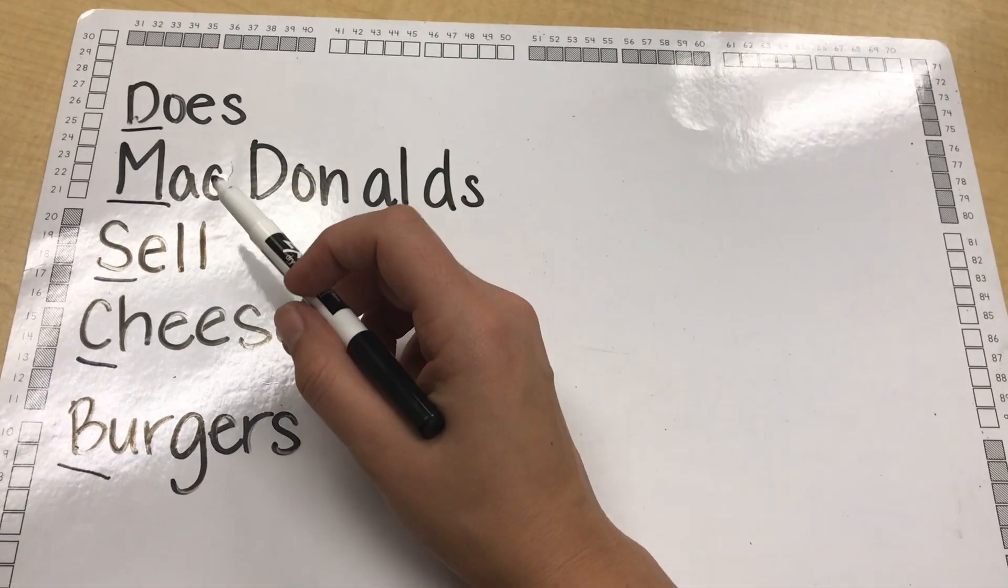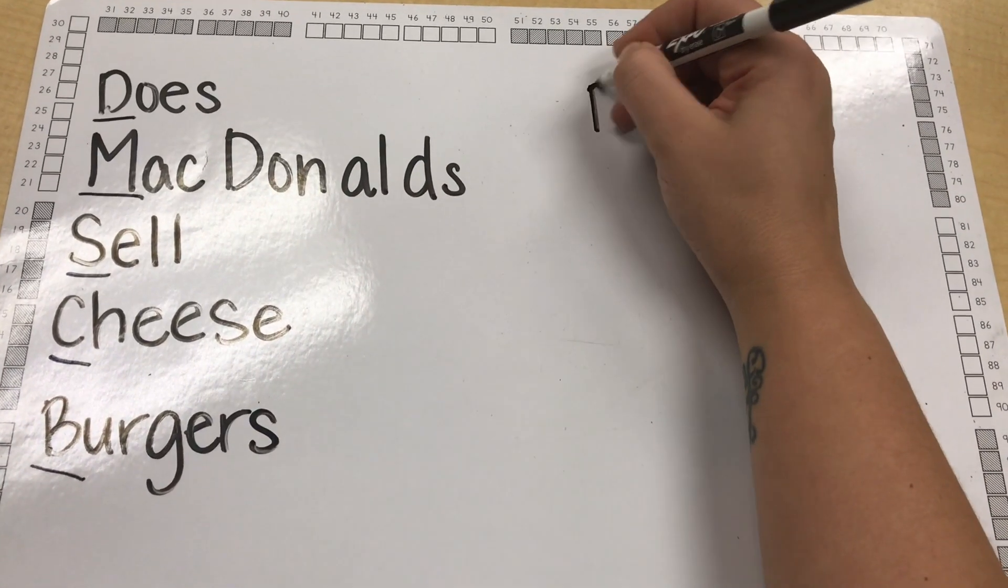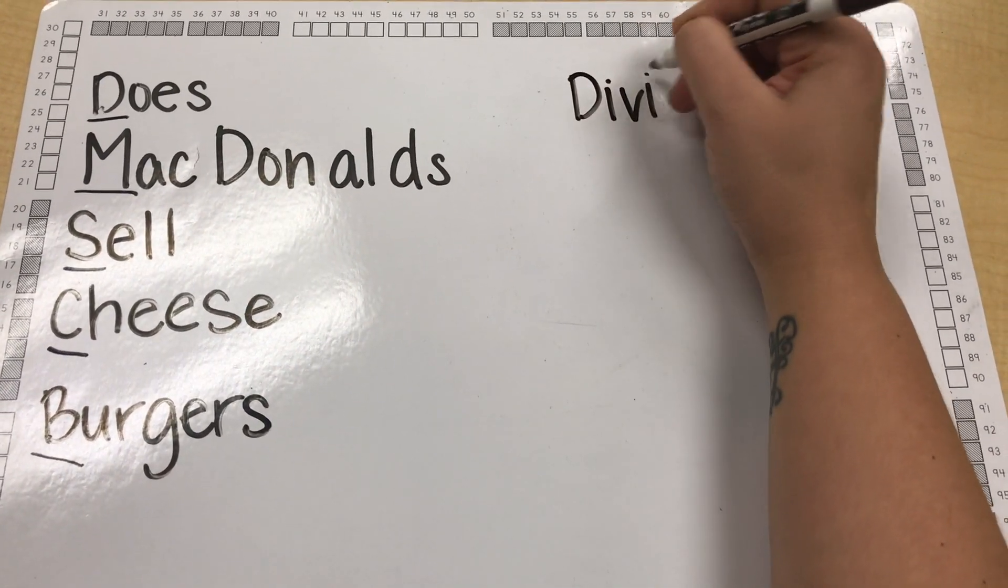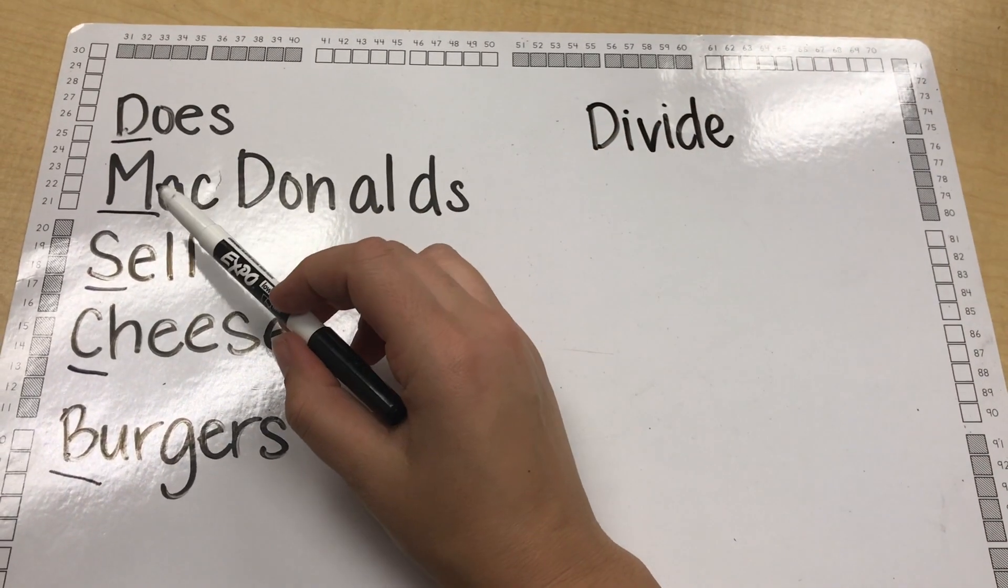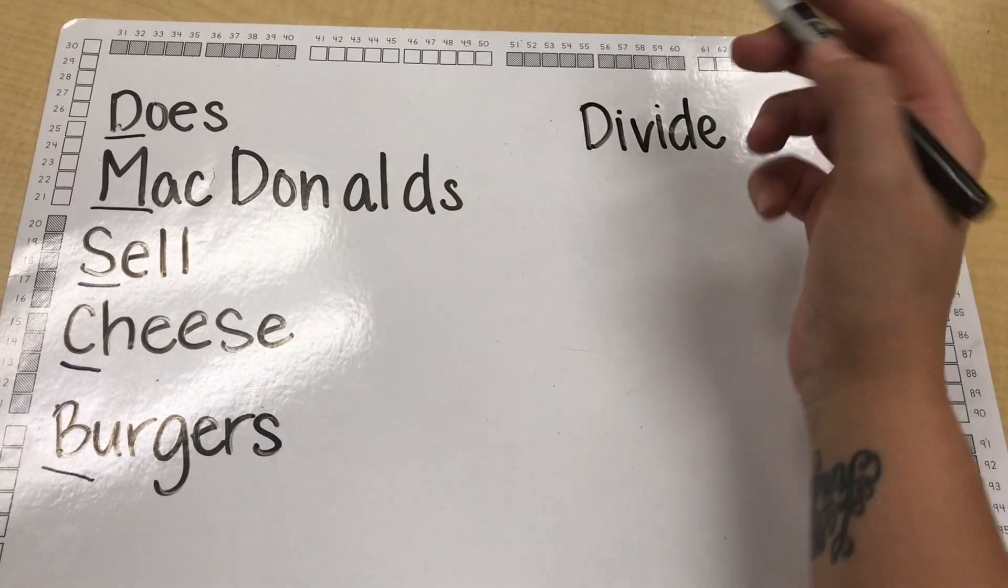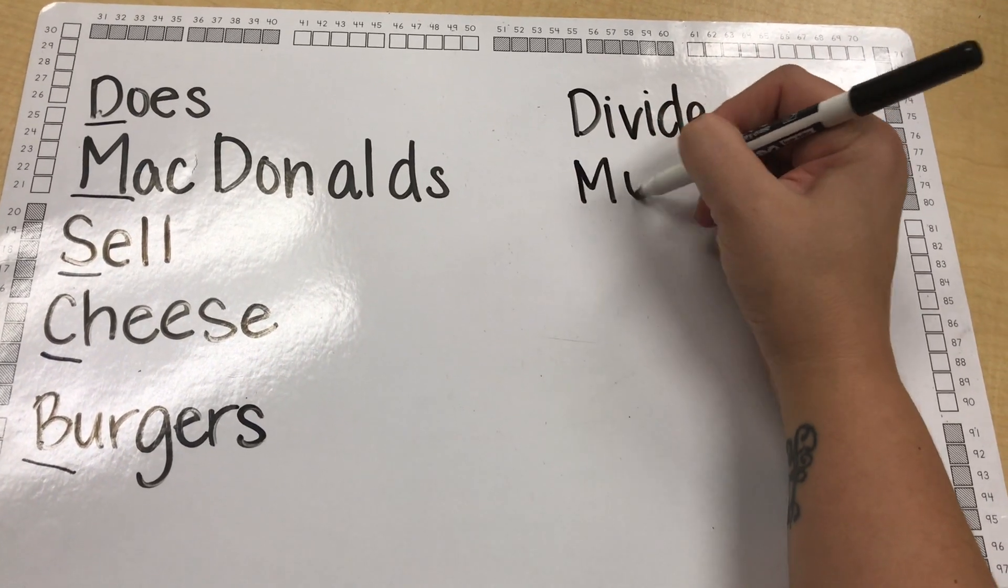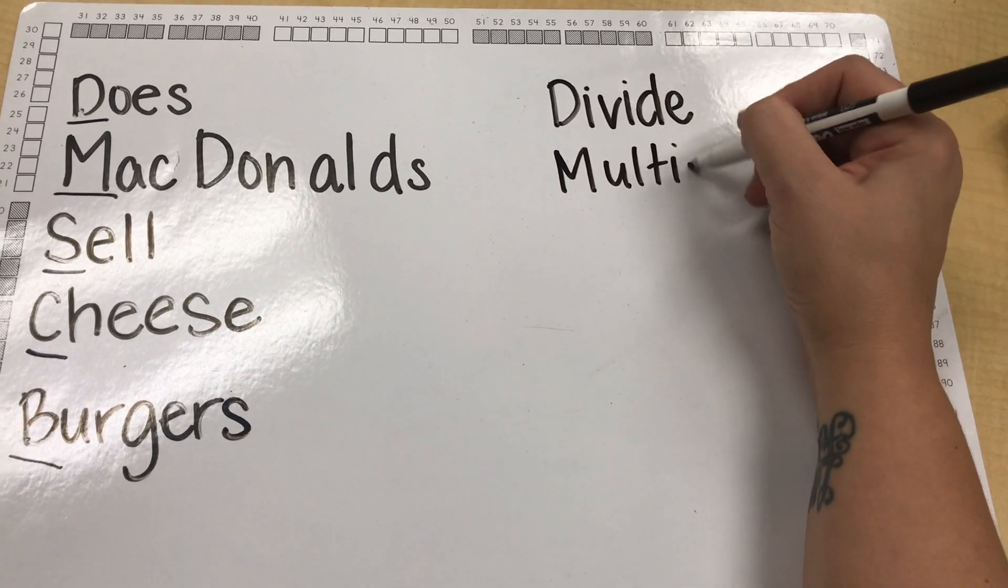First phrase does, the D is underlined and that stands for divide. It is our first step in long division. The second word McDonald's has the M underlined and the M stands for multiply. It is our second step.